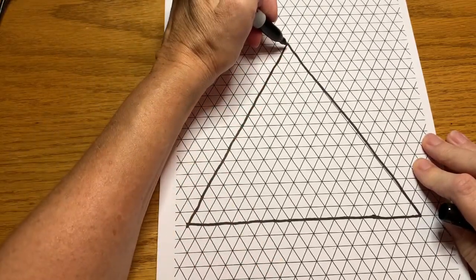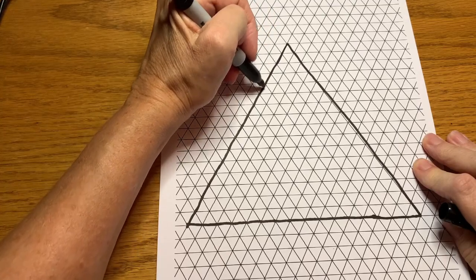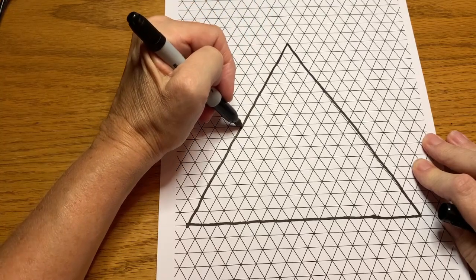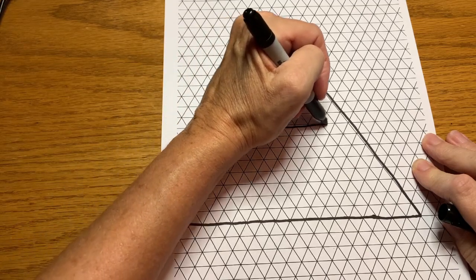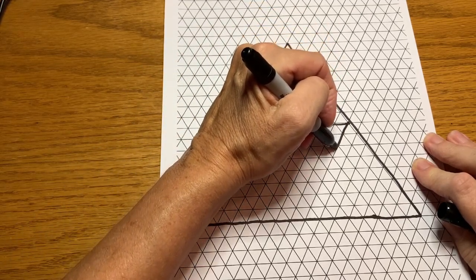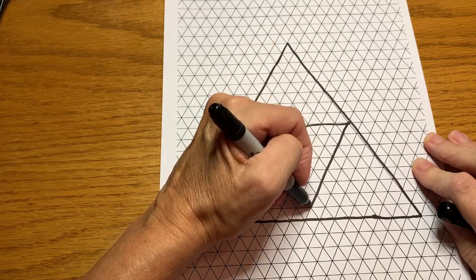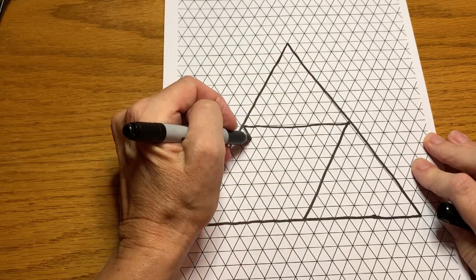I'm going to take half of that which is 8. 1, 2, 3, 4, 5, 6, 7, 8, and make another triangle that is 8 by 8. What's cool with this triangle paper is you just follow the lines and it matches up perfectly.